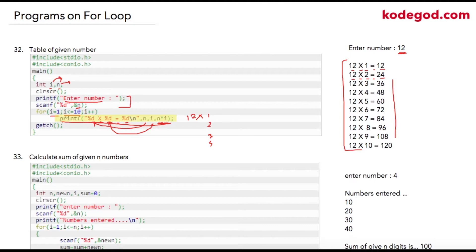Once this statement is printed, the compiler will increment the value of i to 2. Once that value is incremented, it will check the condition: 2 less than or equal to 10, which is true, so it will again print this value. This statement will be executed till the time i is less than or equal to 10.